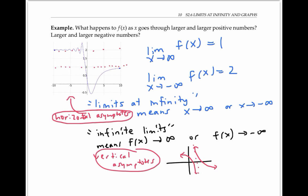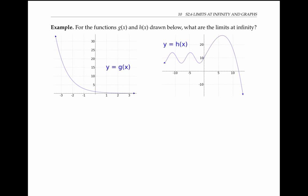The only exception is when we don't have a horizontal or vertical asymptote — that is, when x and f of x are both going infinite at the same time. We'll see an example of this on the next page. Now let's figure out the limits at infinity for the functions g of x and h of x. The function g of x is actually e to the minus x, and it has a horizontal asymptote at y equals zero heading to the right.